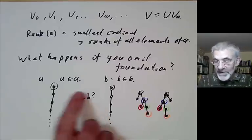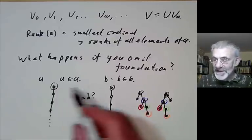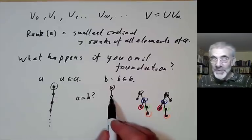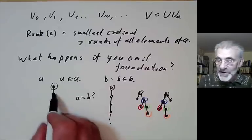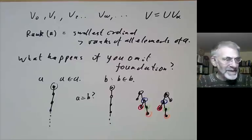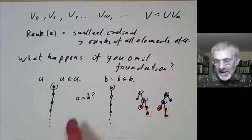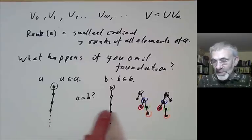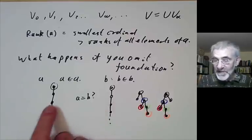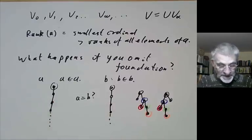But if a set is not well-founded you can't start at the bottom. You can say A equals B if this element equals that element, but that leads you back to the same question of whether A equals B again. So for non-well-founded sets the relation between sets and trees doesn't really work so well, because you can have identical trees that correspond to different sets.